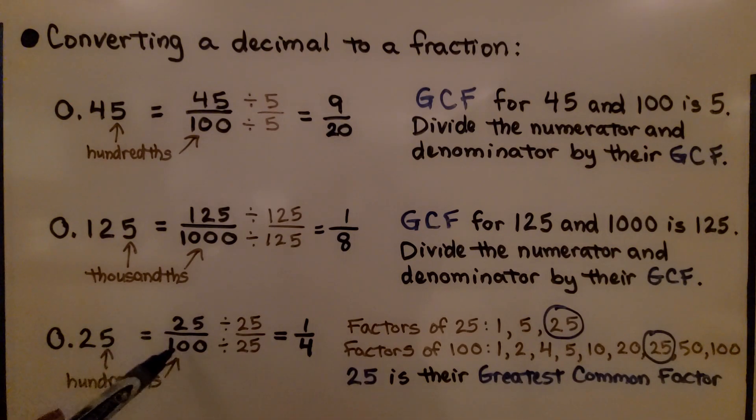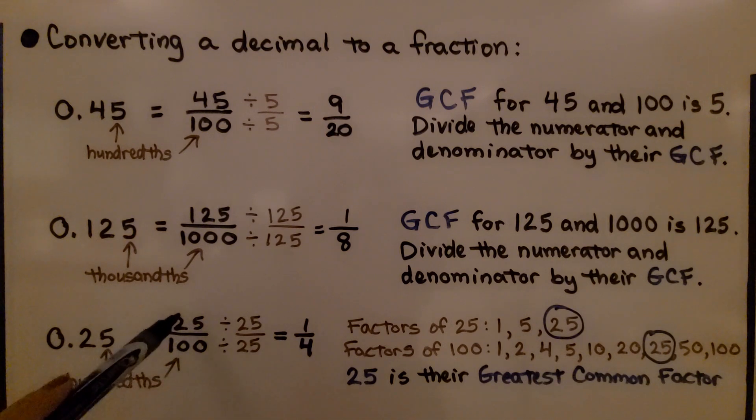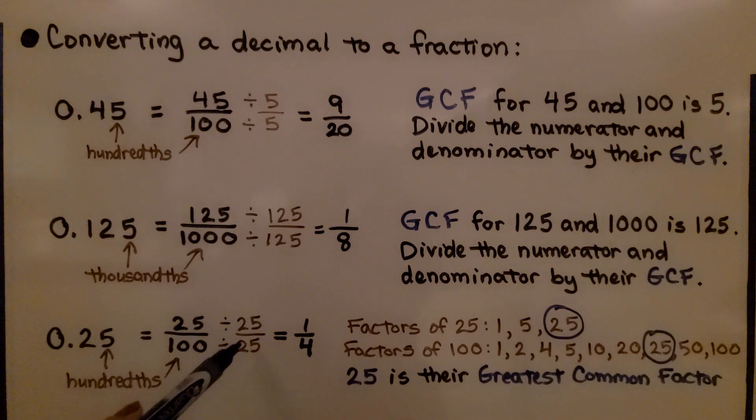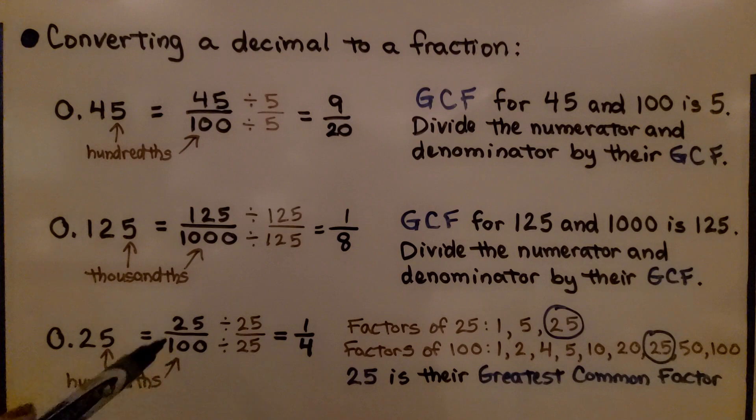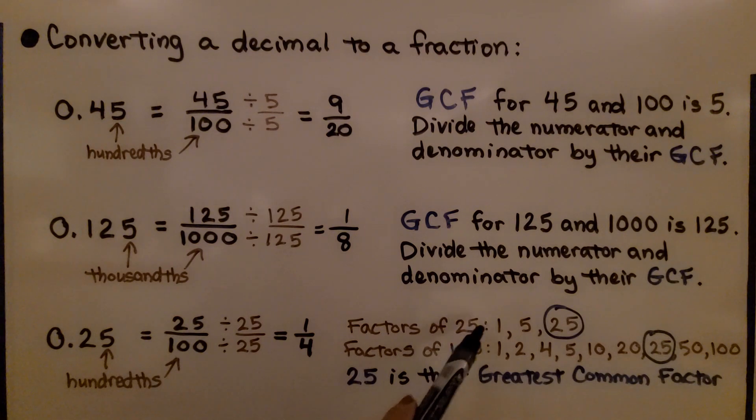Here we have 25 hundredths. We write it over 100. The greatest common factor for the numerator and denominator is 25. We get 1/4. We make a list of the factors: 1 times 25 and 5 times 5. These are the factors of 25.